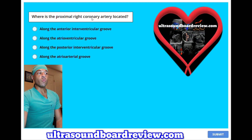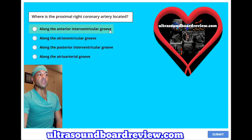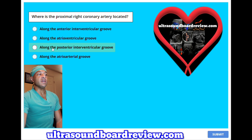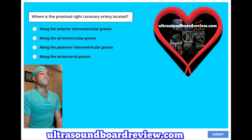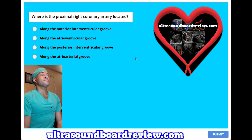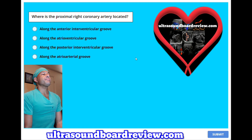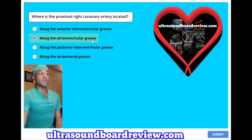Where is the proximal right coronary artery located? A. Along the anterior interventricular groove. B. Along the atrioventricular groove. C. Along the posterior interventricular groove. Or D. Along the atrial arterial groove. The answer is B — along the atrioventricular groove.